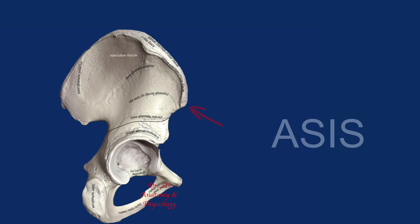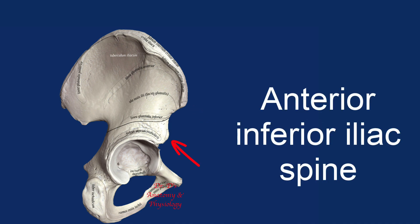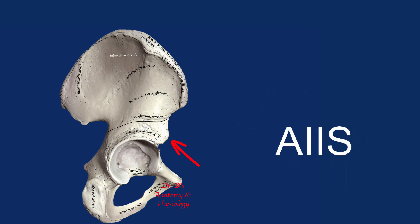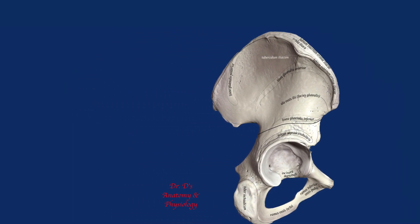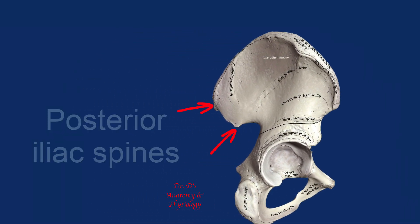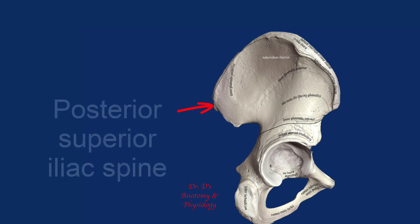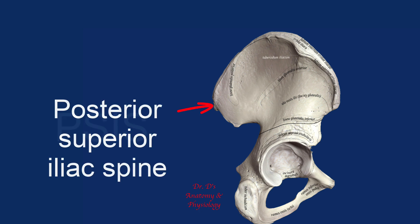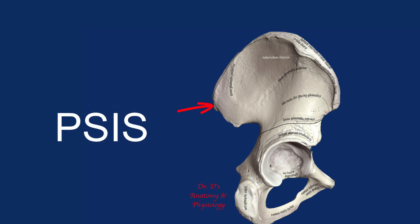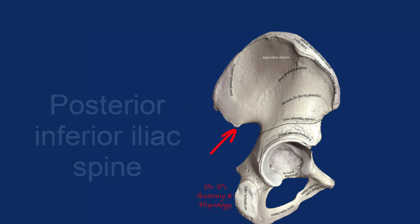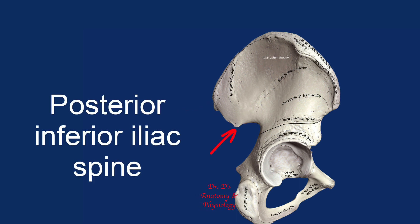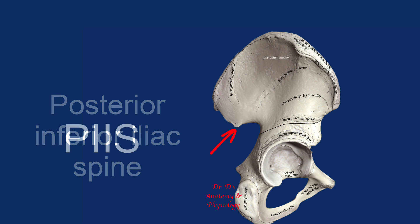The anterior inferior spine is called the anterior inferior iliac spine, abbreviated AIIS. On the posterior side, we have the posterior iliac spines. We call the superior spine the posterior superior iliac spine, or PSIS. The inferior spine is called the posterior inferior iliac spine, or PIIS.